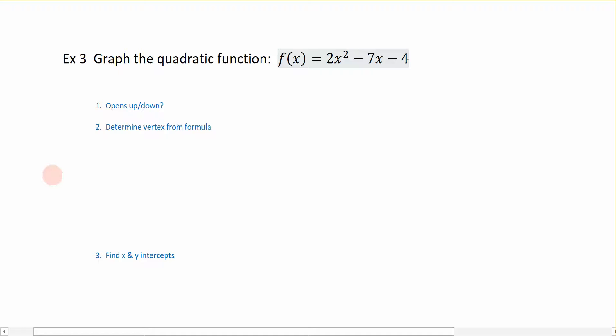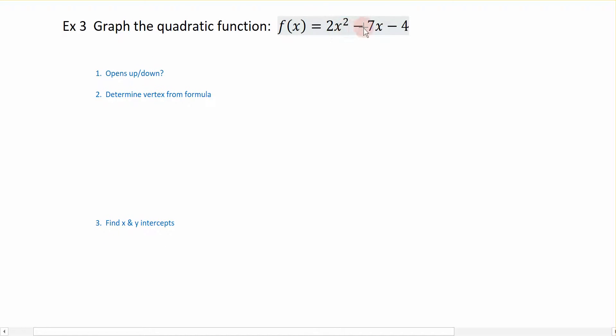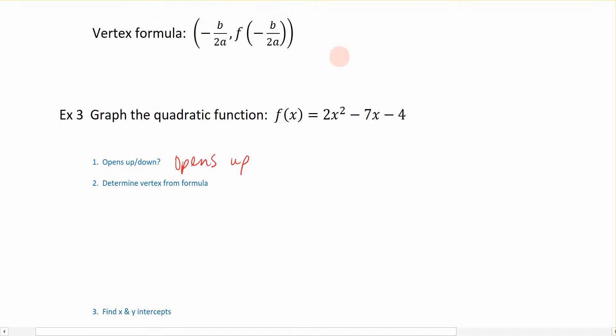Let's start by looking at this equation right here. This is a quadratic equation, and the steps are going to be similar, except for the part where we're dealing with the vertex. We want to identify whether or not this function opens up or down by looking at the leading coefficient. The leading coefficient is positive 2, so we know that this thing opens up.